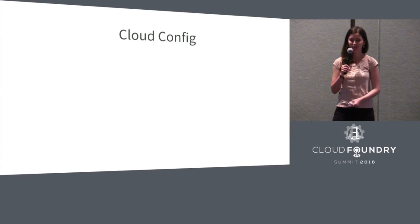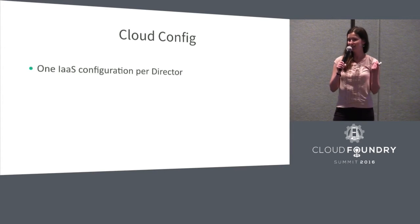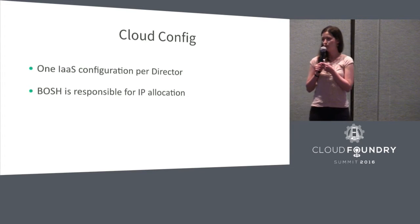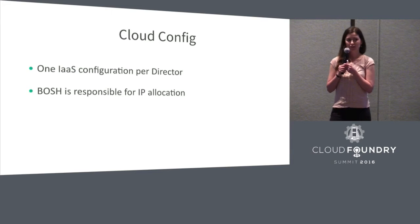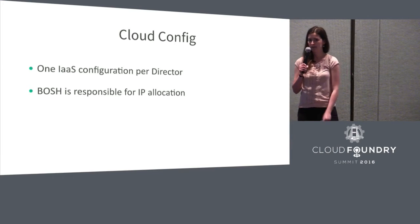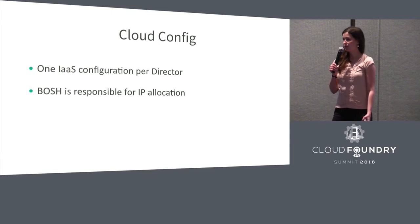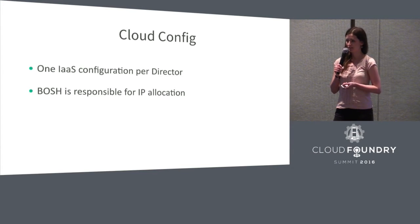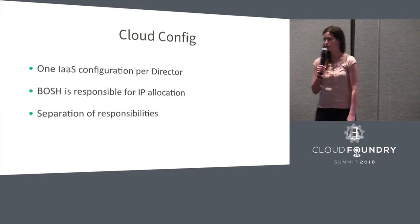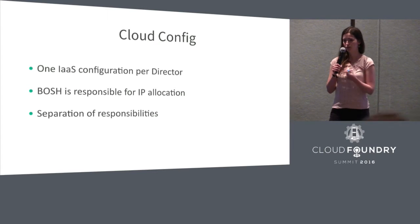Introducing cloud config. Cloud config is an infrastructure-specific configuration that your director is configured with, and it is shared by all deployments managed by that director. Once the director is configured with cloud config, Bosch starts taking care of IP allocations for you, so you don't have to worry about what IPs are currently in use. Since all networks are shared across deployments, Bosch will know what IPs are in use and what IP it can allocate to the next instance. This also allows separation of responsibilities between deployment operators and infrastructure operators.